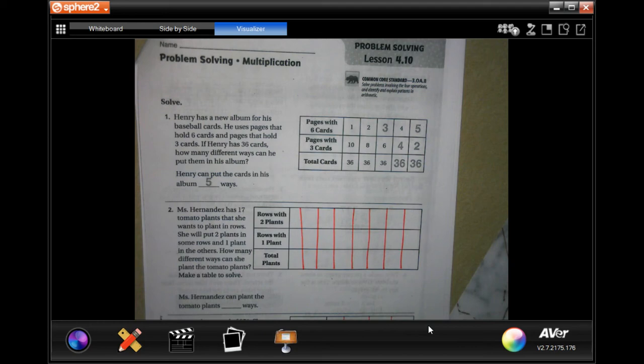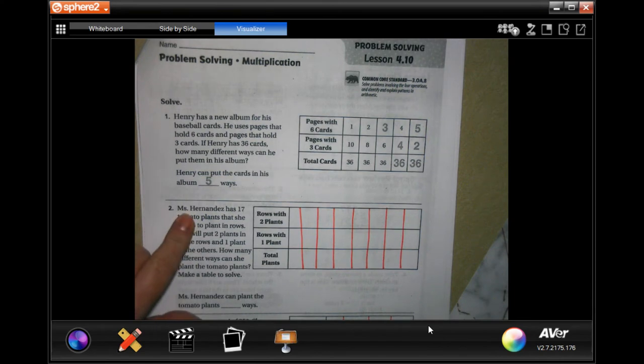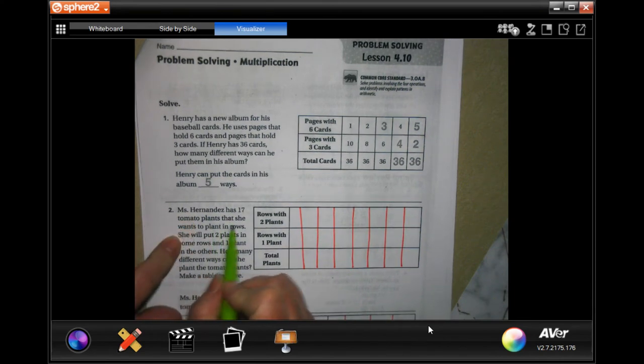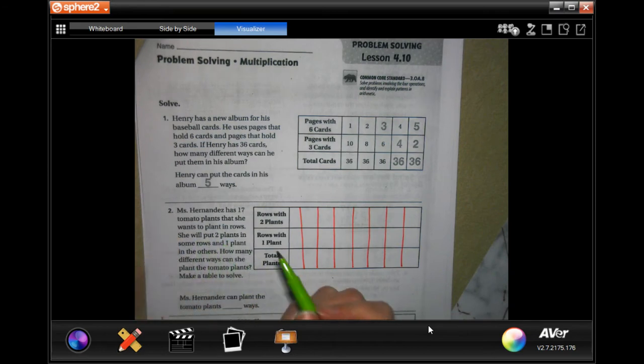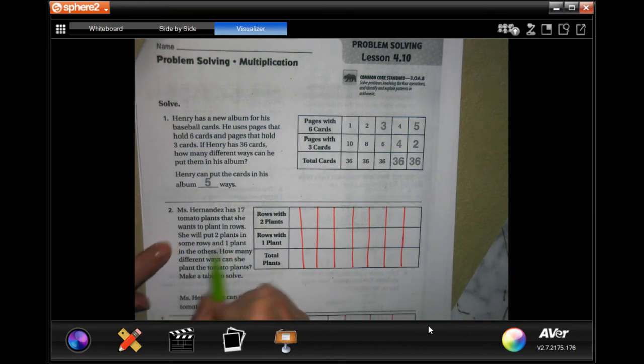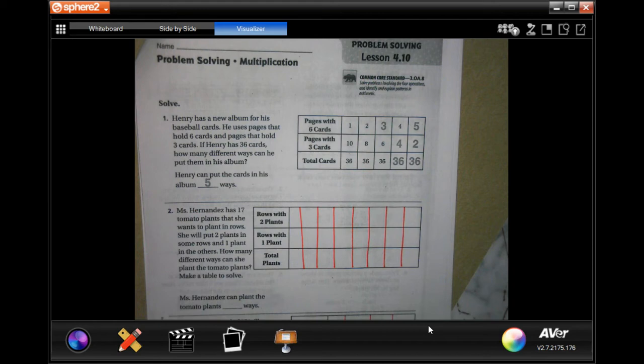Hi guys, welcome to third grade chapter four lesson ten. We're going to get started with number two. Miss Hernandez has 17 tomato plants. If she wants to plant them in rows, she will put two plants in some rows and one plant in the others. How many different ways can she plant the tomato plants? Make a table to solve.